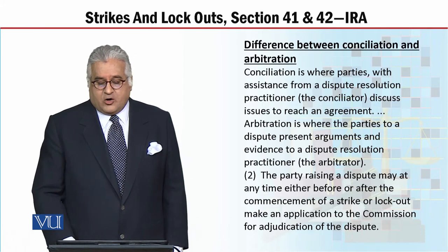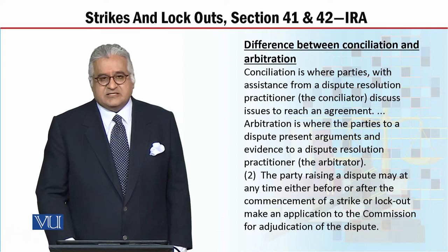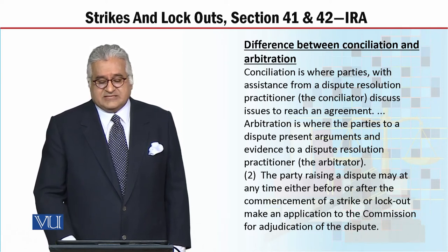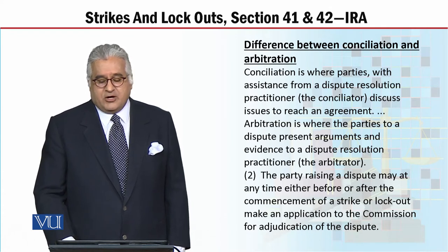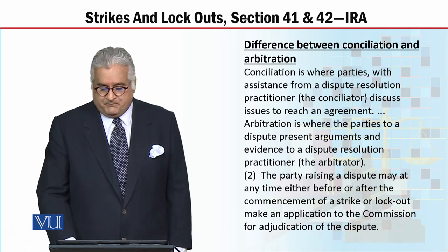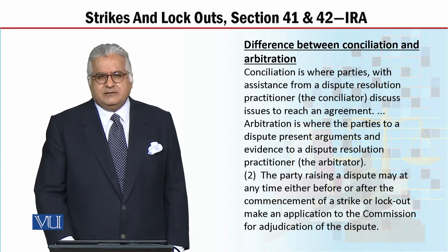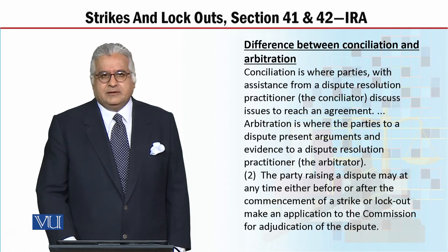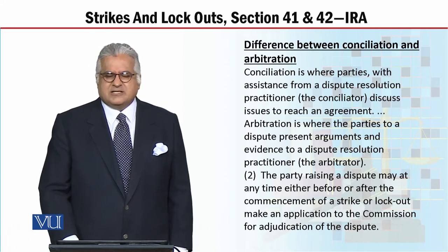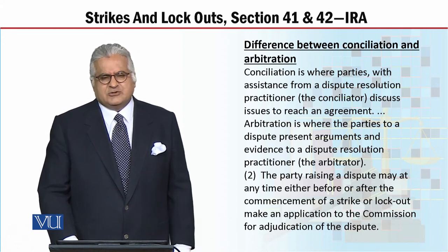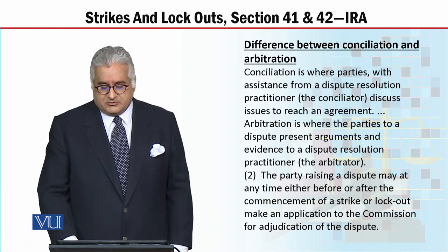Let us look at the difference between conciliation and arbitration. Conciliation is where parties, with assistance from a dispute resolution practitioner, sit together — between the workman and employer — and basically a conciliator brings them together to talk so that an agreement can be reached. In arbitration, unlike conciliation, there are no informal negotiations; arbitration is based on arguments and logic, not baseless claims. Conciliation has a slow, relaxed tempo of dialogue, whereas arbitration is more formal.